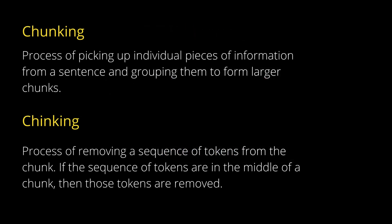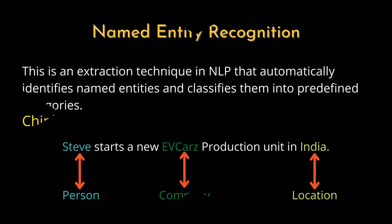Chunking: Chunking is the process of picking up individual pieces of information from a sentence and grouping them together to form larger chunks. Chunking works on top of POS tagging — it uses POS tags as input and provides chunks as output. Chunks can be in the form of noun phrases, verb phrases, etc. Chunking is a very important process for named entity recognition. Chinking: Chinking is the process of removing a sequence of tokens from a chunk. If the whole chunk is not needed, the entire chunk is removed. If a sequence of words in the middle of a chunk needs to be removed, only those tokens are removed.